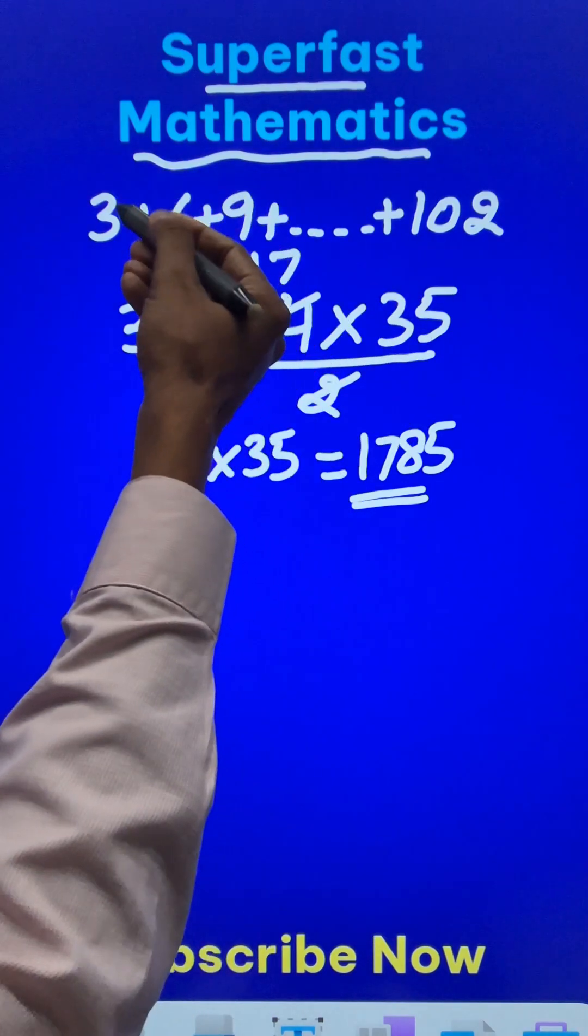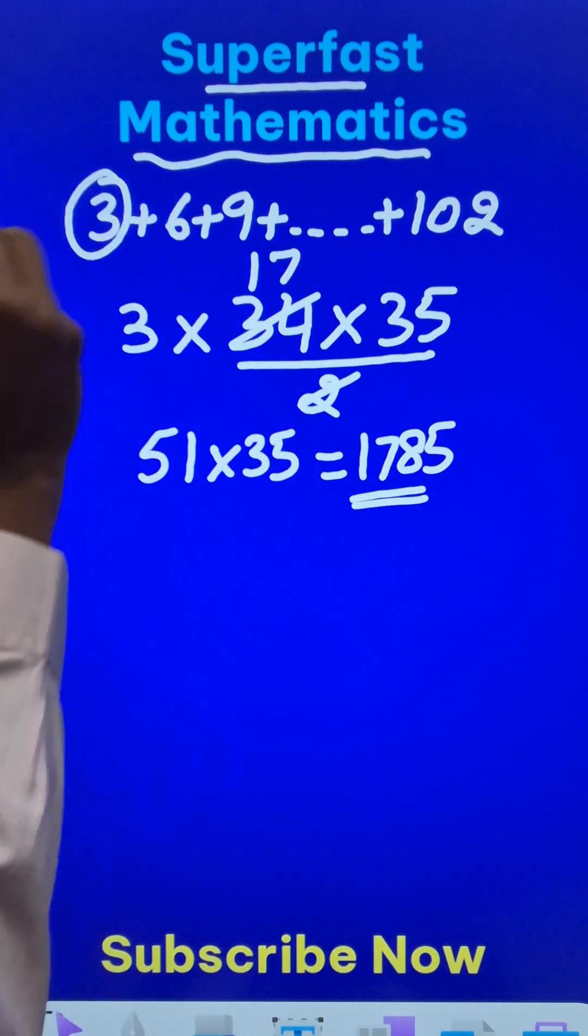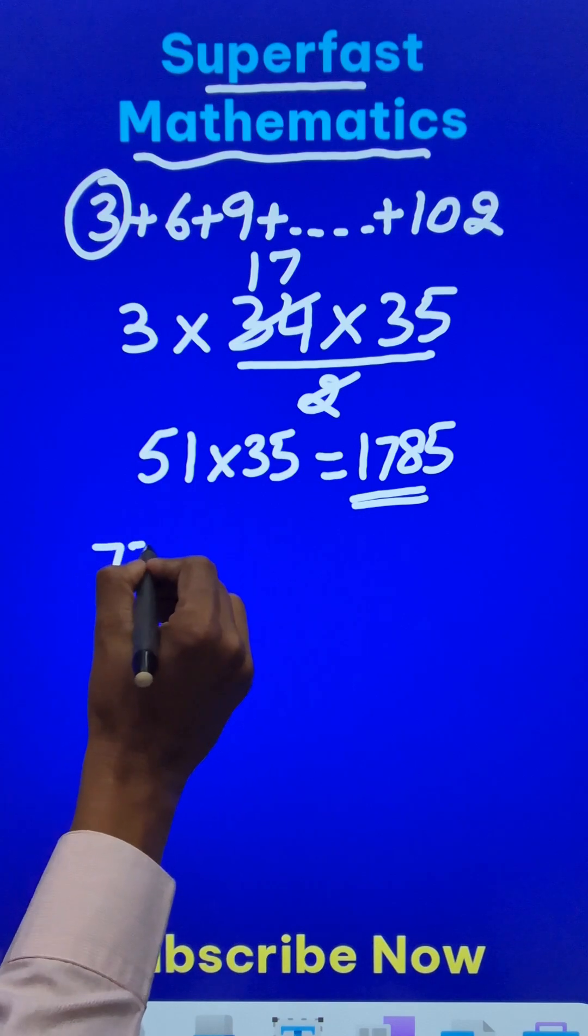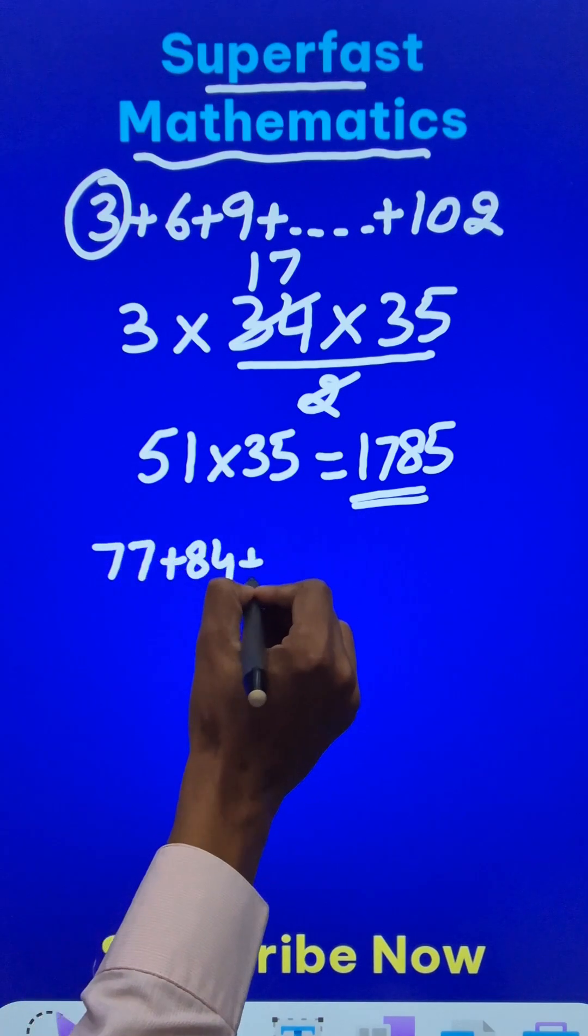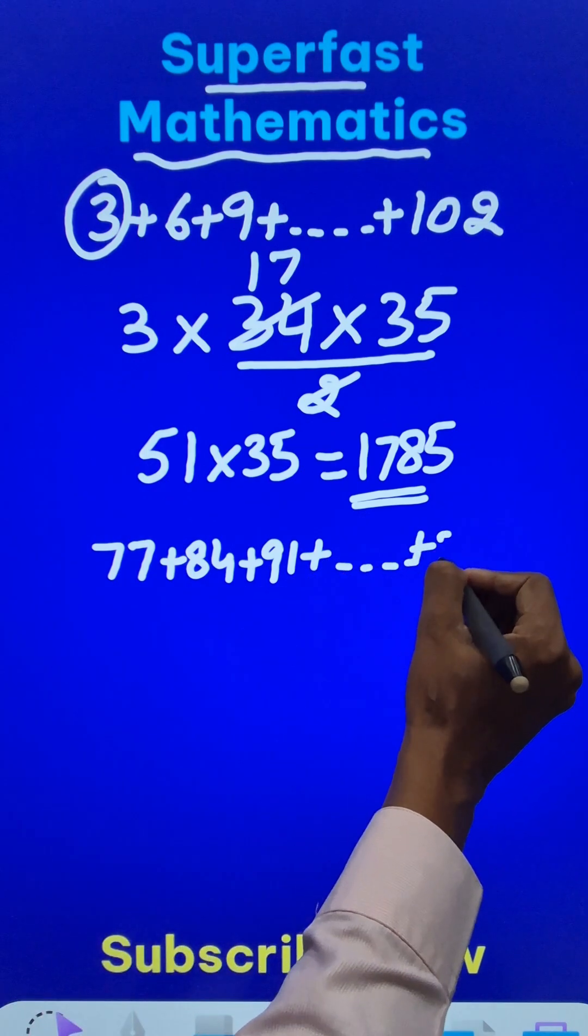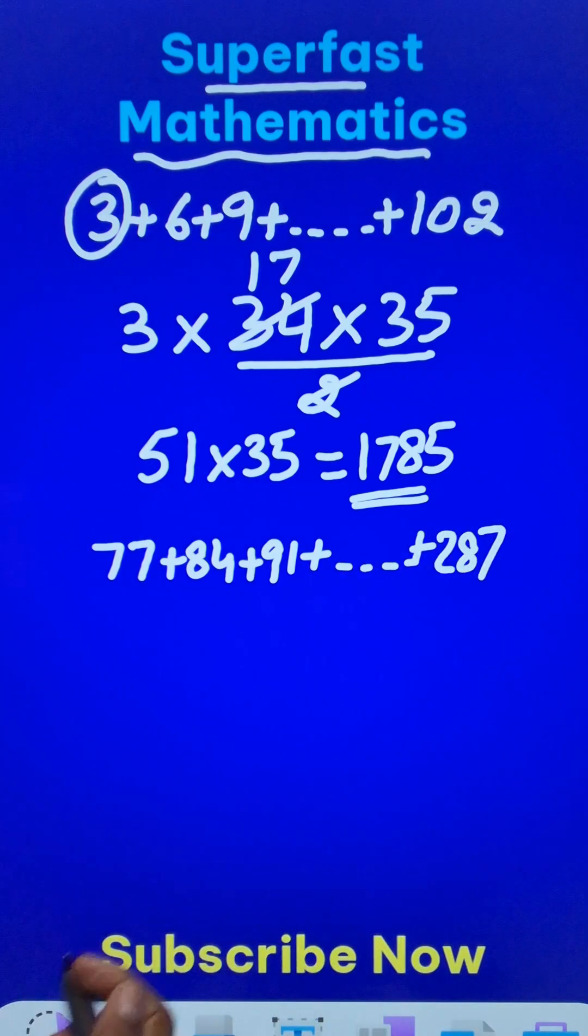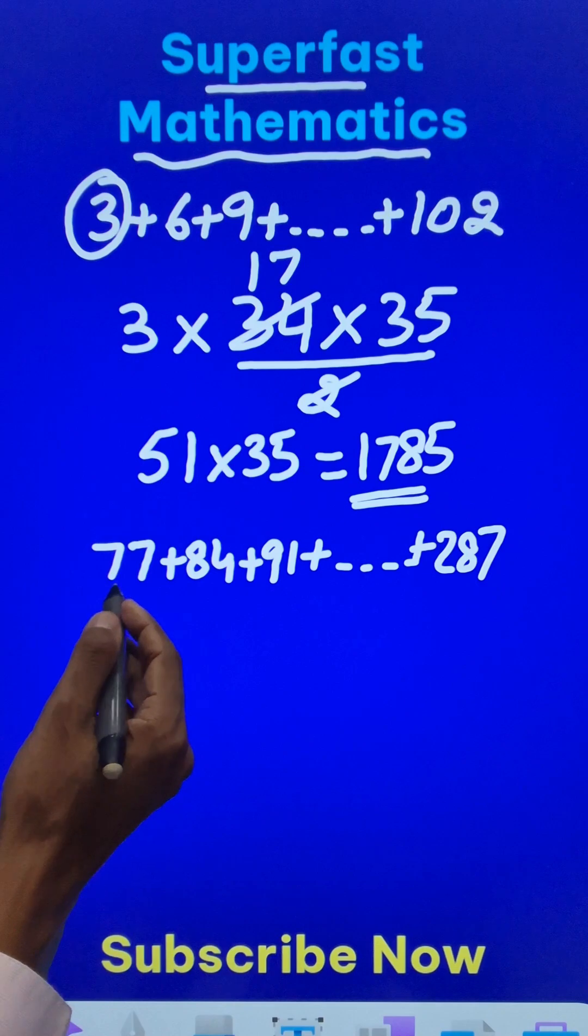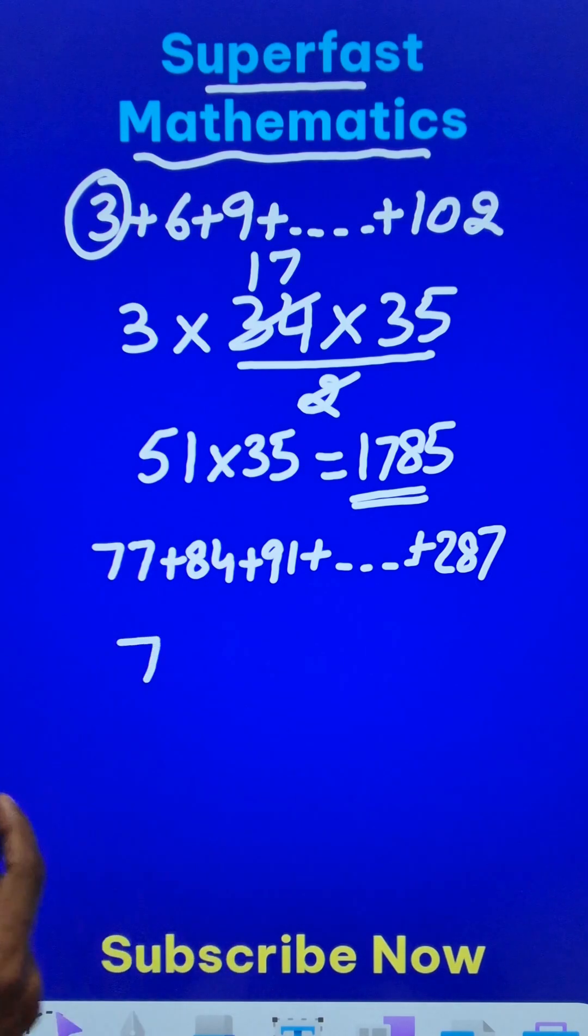Likewise, if the multiples are not starting from the first multiple, like suppose you have 77 and then 84 and then 91, these are all multiples of 7, but they are starting with 77 and they go on up to say number like 287. And now I want to find the sum of these multiples of 7. So we have a 7. Now what do we do?